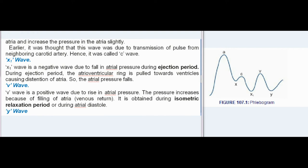V wave: V wave is a positive wave due to rise in atrial pressure. The pressure increases because of filling of atria from venous return. It is obtained during isometric relaxation period or during atrial diastole.